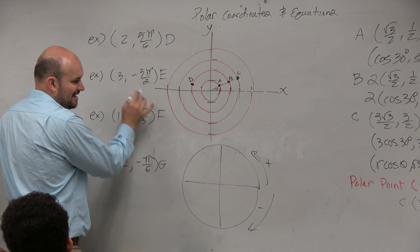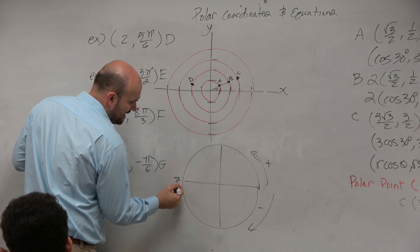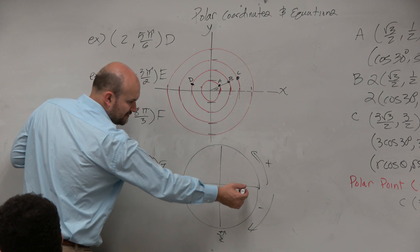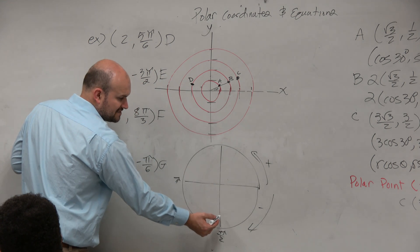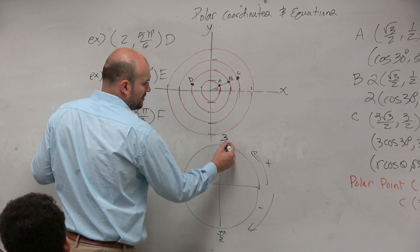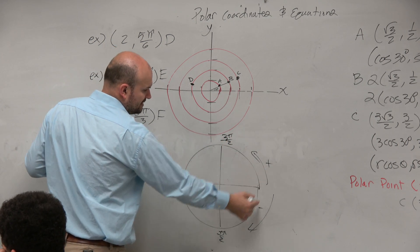So negative direction is going this way. And again, we're talking about 3π over 2. Well, think about halfway around circle is π. So therefore, half of π is π halves. So if you're going in the negative direction, you're at π halves. This is really 2π halves. So this would be 3π halves in the negative direction.